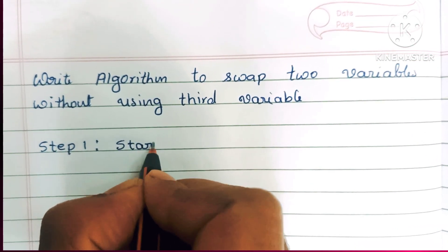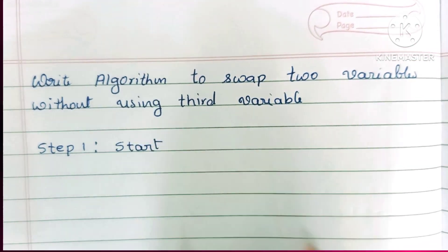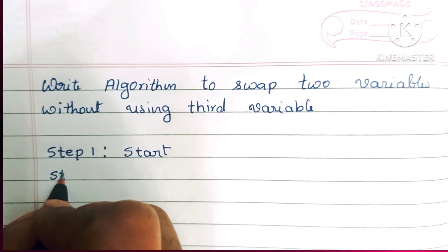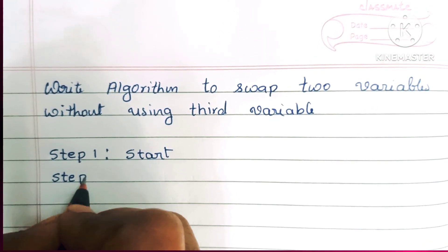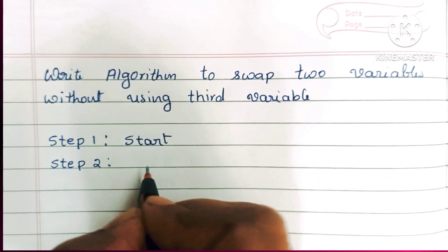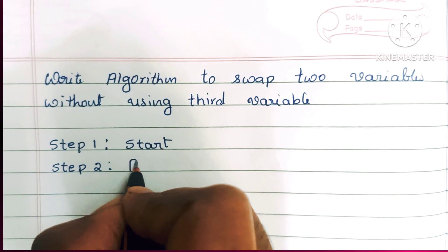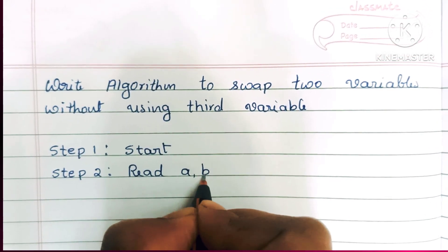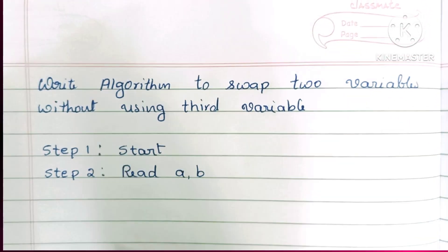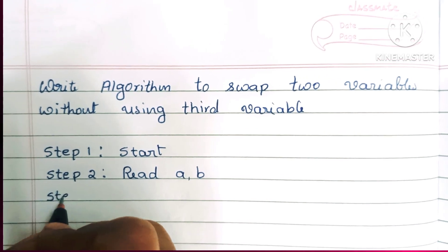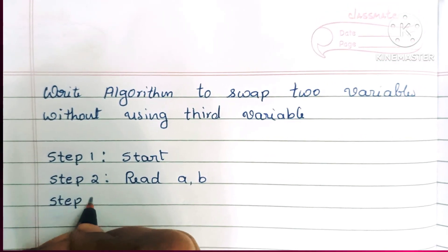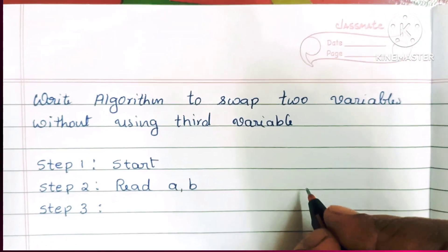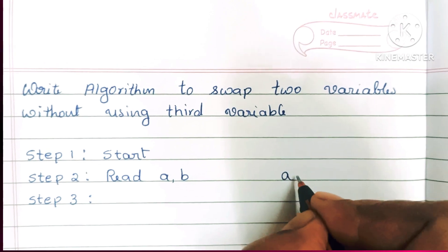An algorithm always starts with a start statement, so in step 1 we write the start statement. In step 2 we have to read the two variables — that is, read the values of a and b. In step 3 we start the process.